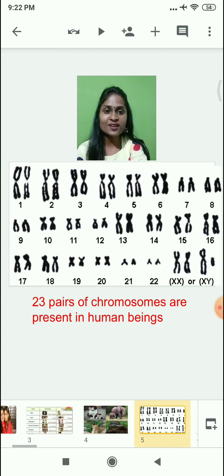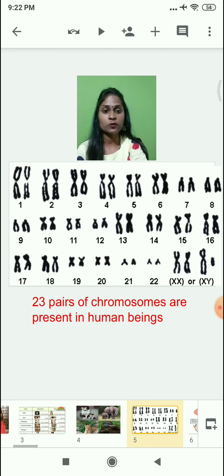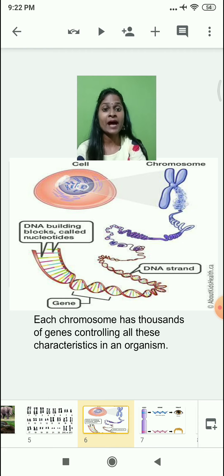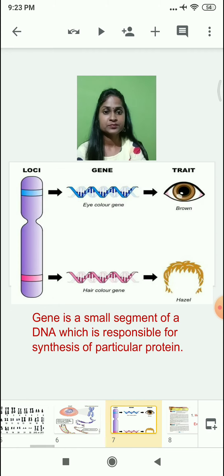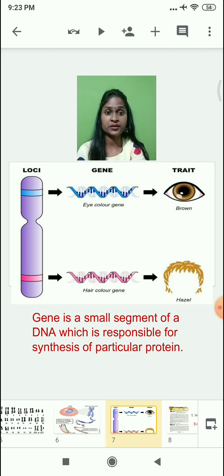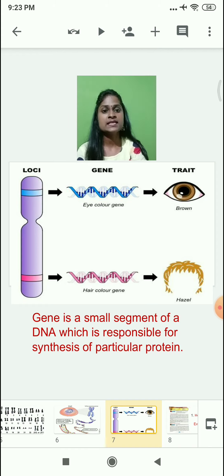The answer to this question lies in the chromosomes. We all know that humans possess a total of 23 pairs of chromosomes, and each chromosome has thousands of genes which are responsible for different characteristics of an organism. Each gene is responsible for a particular character like eye color, hair color, skin color, and so on. A gene is a small segment of the DNA which is responsible for the synthesis of a particular protein in our body.